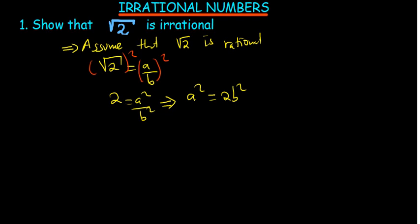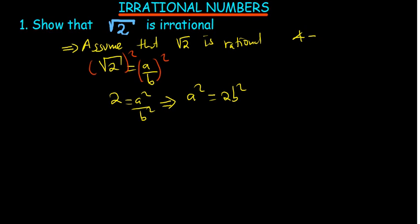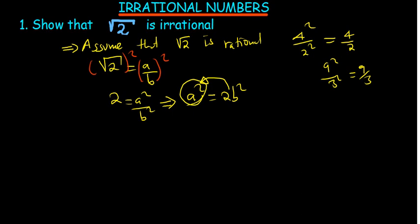If A squared equals 2 times B squared, this means 2 can go into A squared. For example, if 4 squared can be divided by 2 squared, this also means 4 can be divided by 2. Similarly if 9 squared can be divided by 3 squared, then 9 can be divided by 3. So here, 2 is a factor of A squared, which means A can be divided by 2.